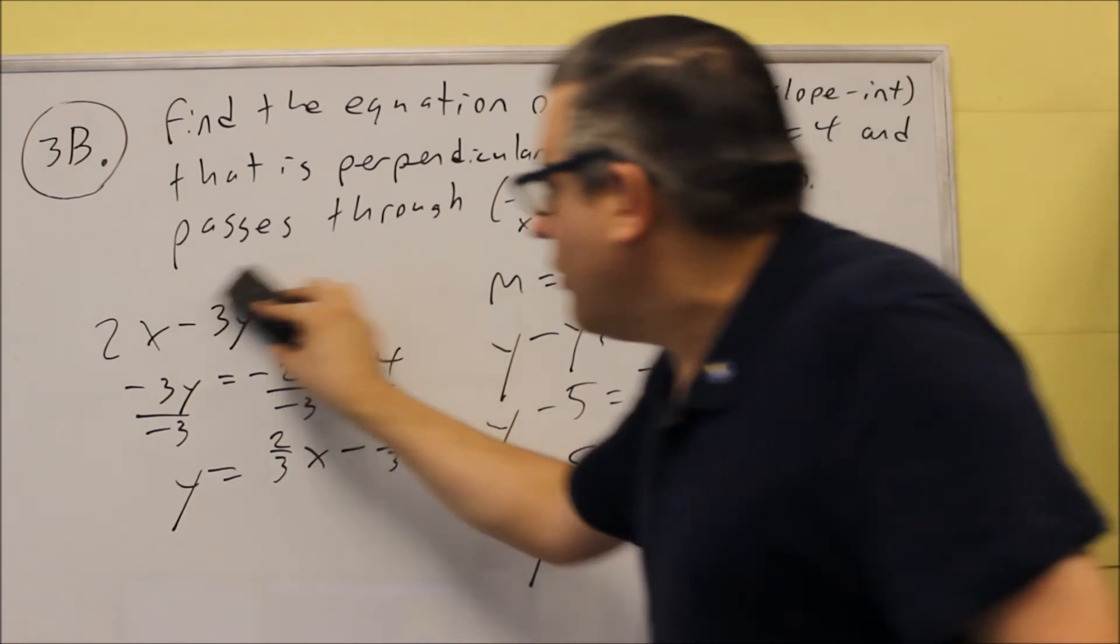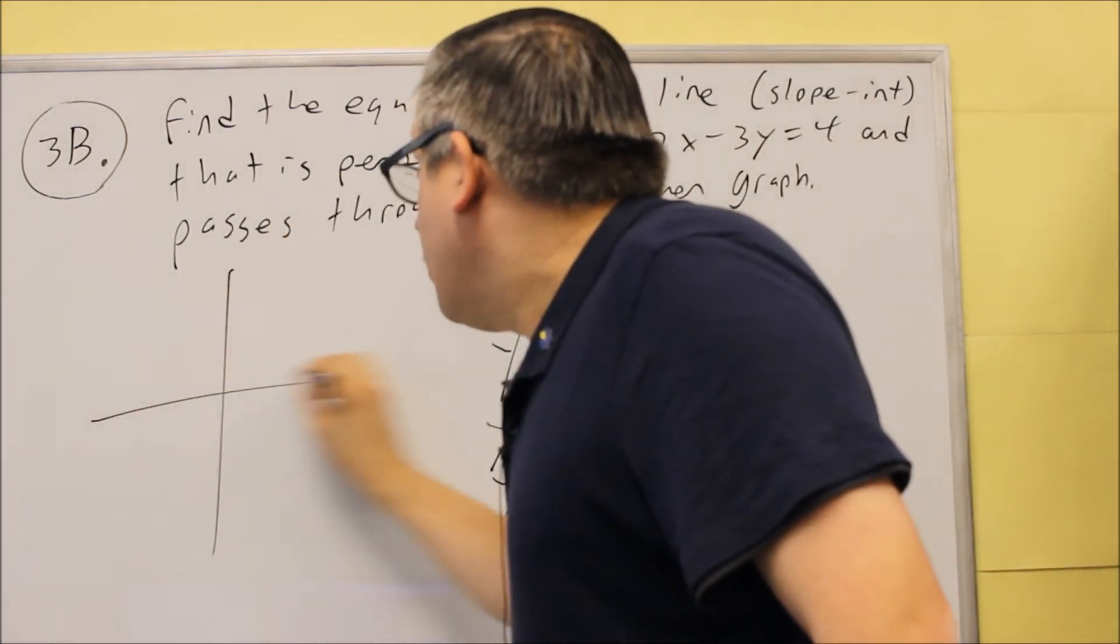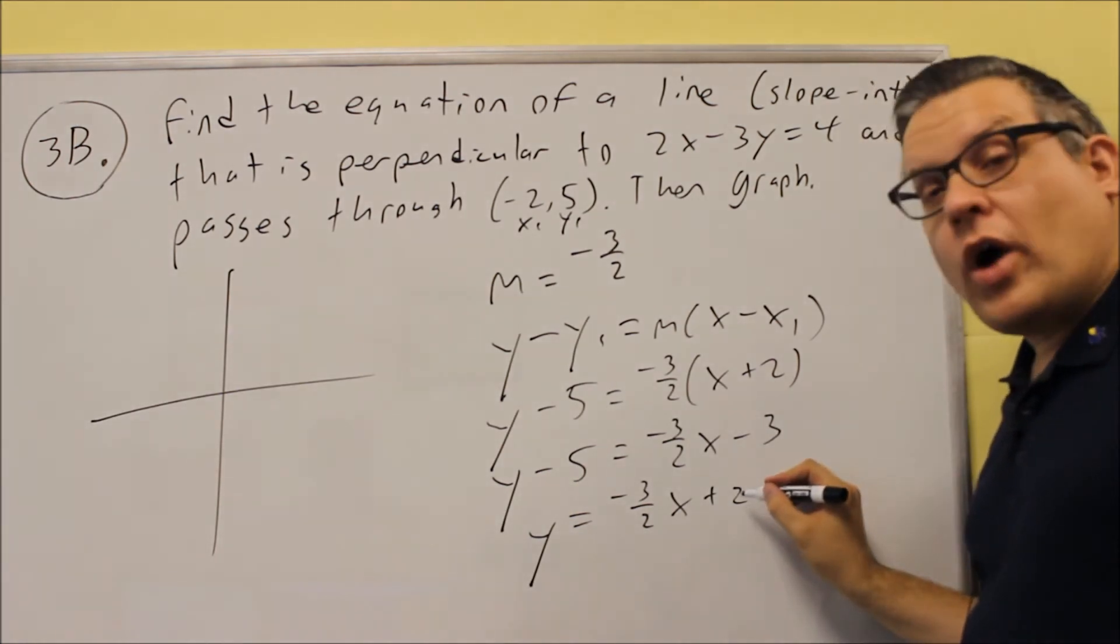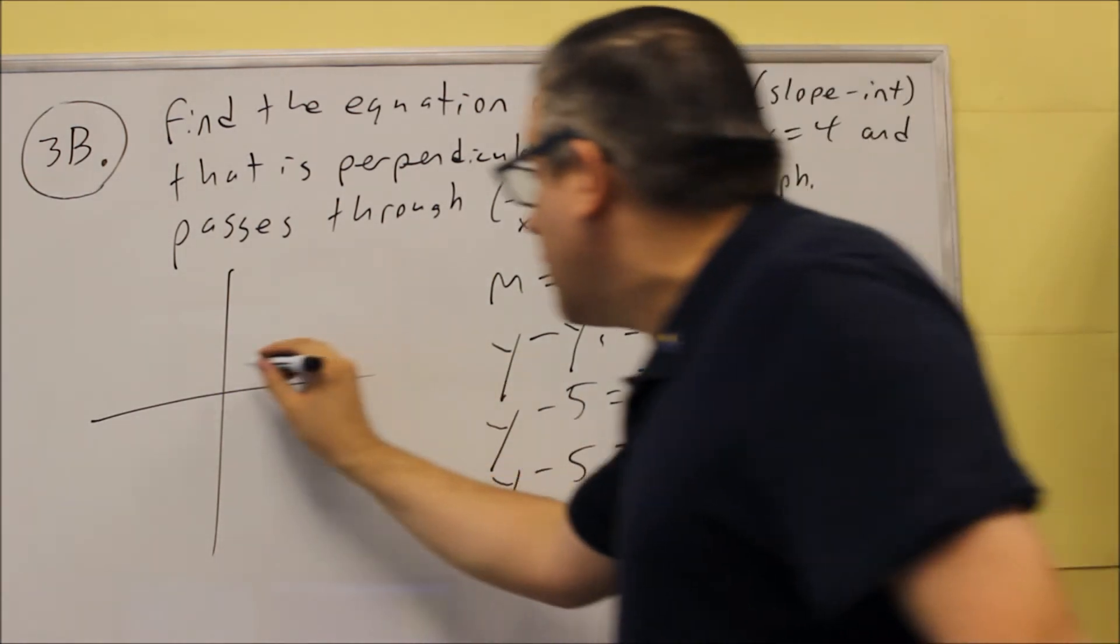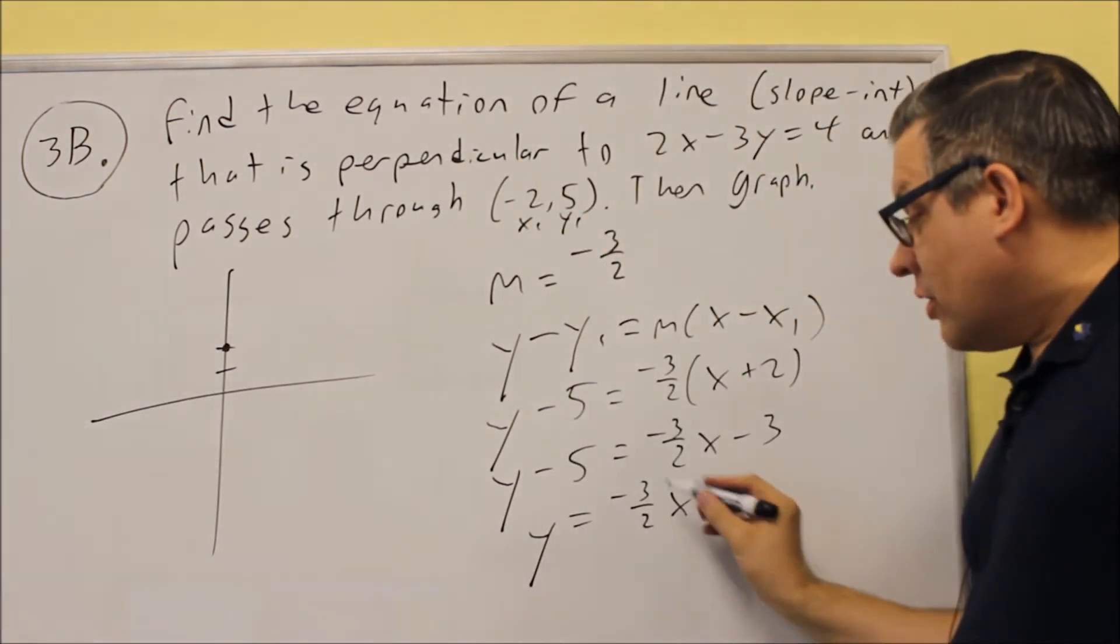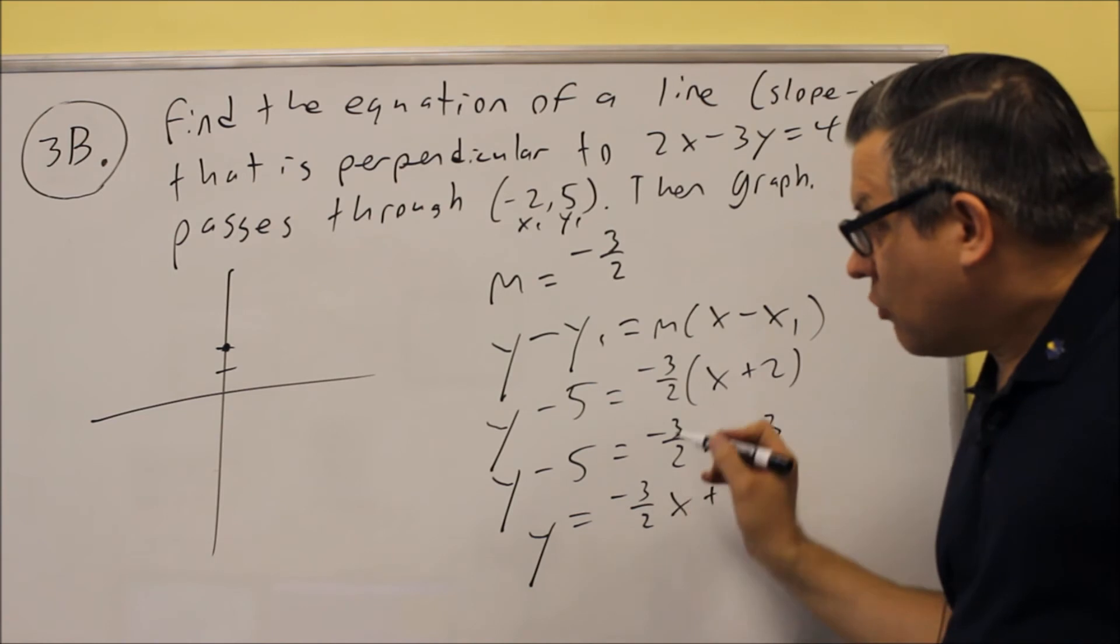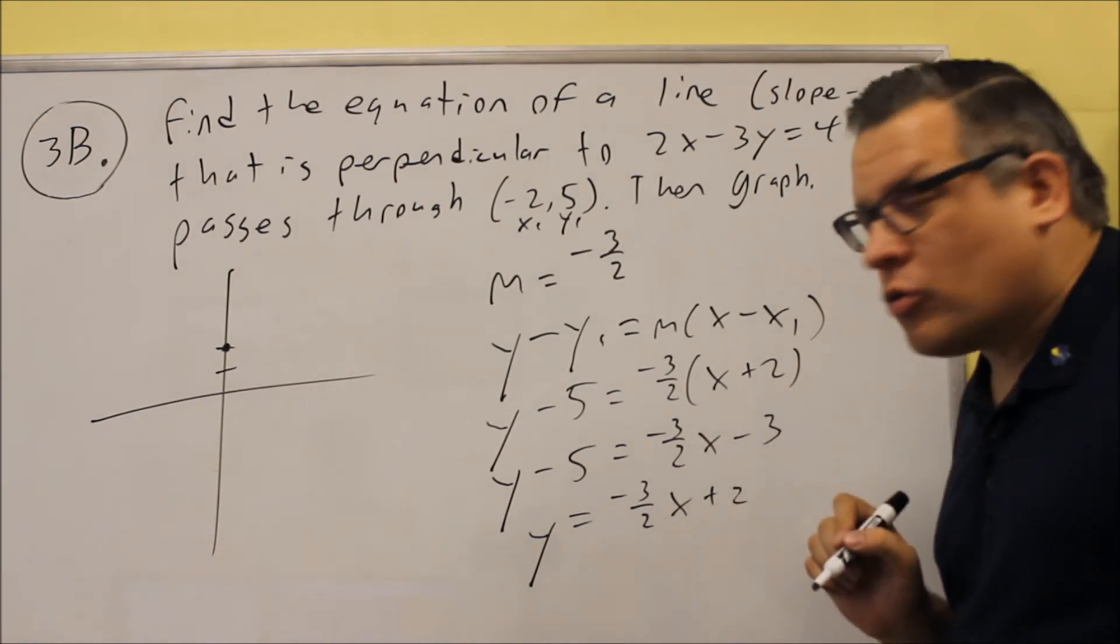The last thing we want to do is graph. So I'll do that over here. Here you always begin with the y-intercept, so there's a 2 there, so we'll go up 2. And then the 3/2, I'm going to put the negative with the 3 here, which means that I'm going to go down 3 and to the right.